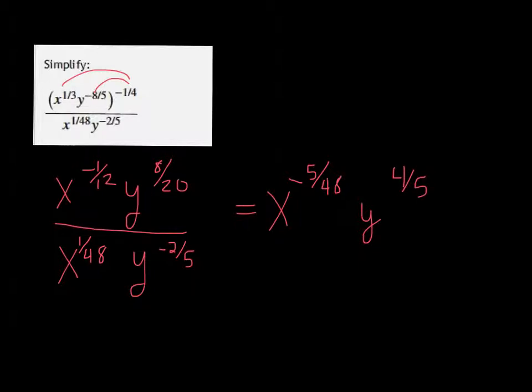But the negative 5 over 48, you can't have negatives in your exponents in your answer, so we need to bring that down to the bottom and make it positive 5 over 48.